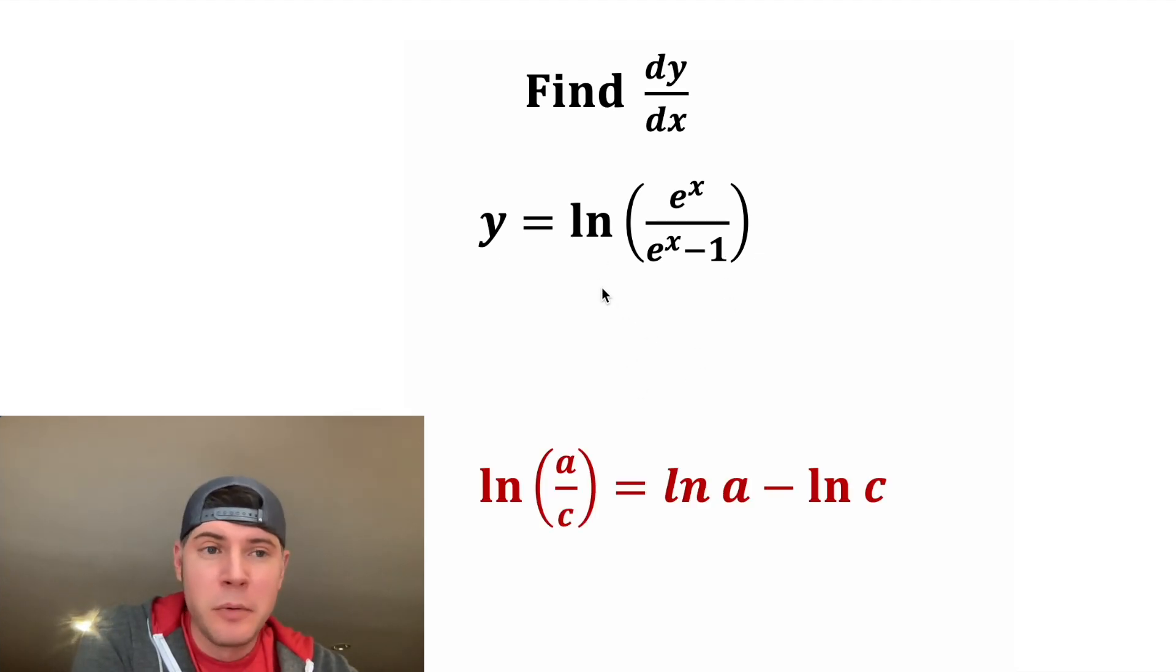But this is dealing with logarithms. So first thing we want to do is apply this rule of logarithms. The natural log of a over c is equal to the natural log of a minus the natural log of c.